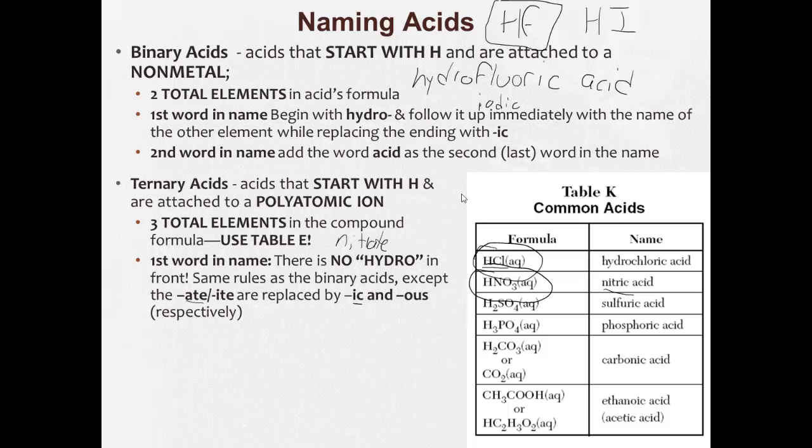SO4 is sulfate. This has a slight cheat to the rule, but it's given to you here. Becomes sulfuric acid.